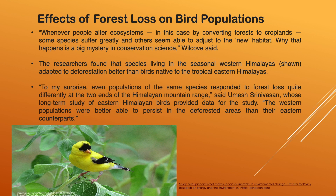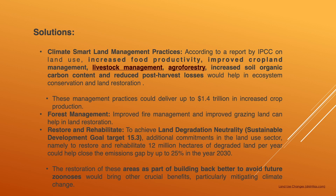Climate-smart land management practices, according to a report by the IPCC on land use, include increased food productivity, improved cropland management, livestock management, agroforestry, increased soil organic carbon content, and reduced post-harvest losses — all of which would help in ecosystem conservation and land restoration. These management practices could deliver up to 1.4 trillion dollars in increased crop production.